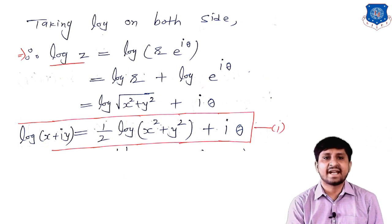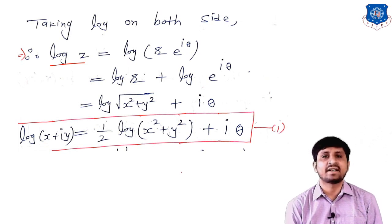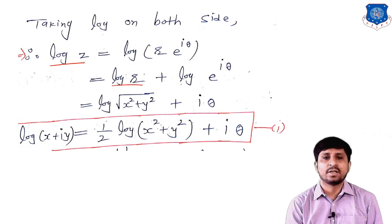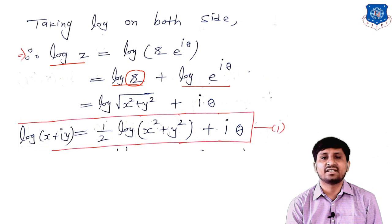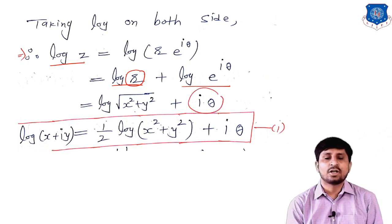The exponential form is z = r·e^(iθ). Taking log on both sides: log z = log(r·e^(iθ)) = log r + log e^(iθ). Since r = √(x² + y²), we substitute: log√(x² + y²) + log e^(iθ). Since logarithmic and exponential functions are inverses, log e^(iθ) = iθ.